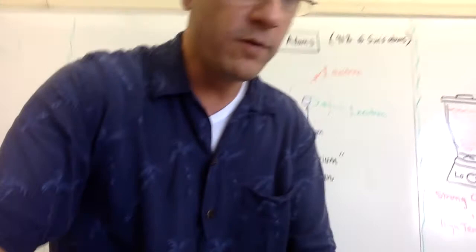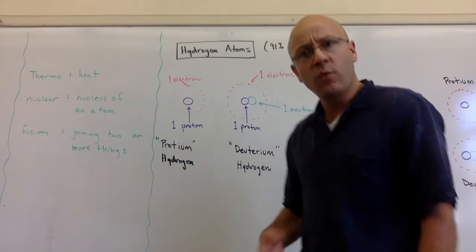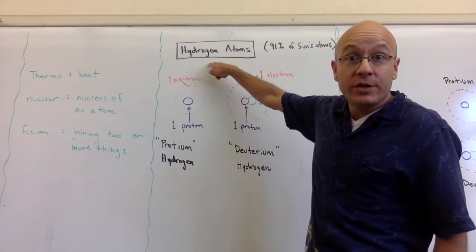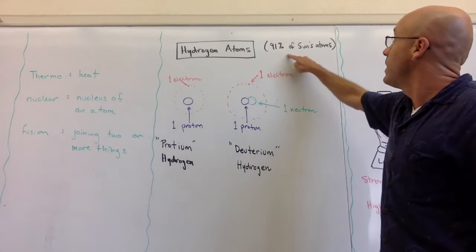Let's move over here. So now we need to talk about what atoms are being fused together, which atoms are being smashed into each other so hard that they then stick to each other. We're going to focus on hydrogen. So in the homework that you did, you found out that hydrogen is 91% of the sun's atoms.